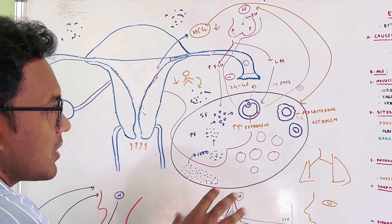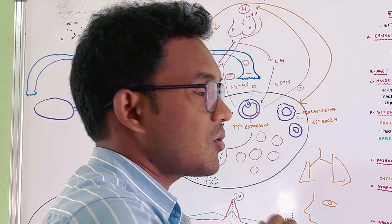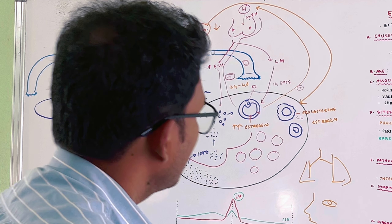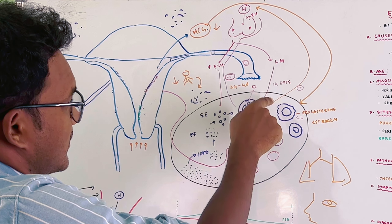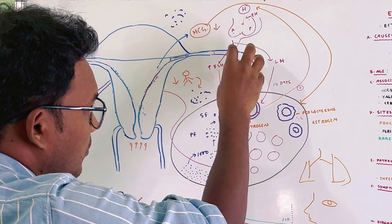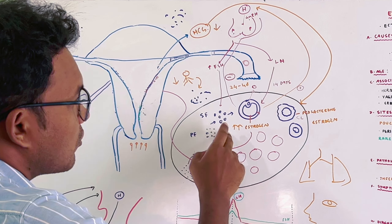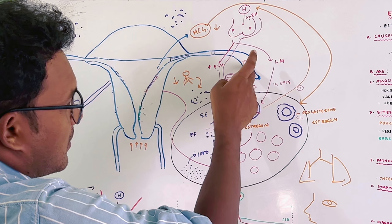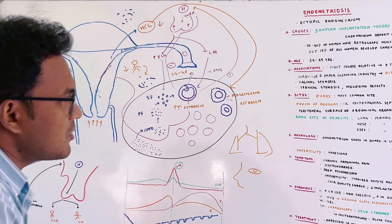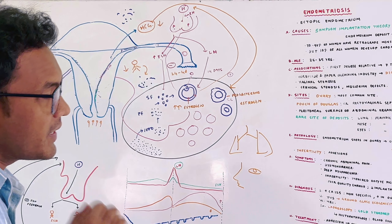When we collect endometrium, there is proliferation due to estrogen and secretions. This forms a cyst with a chocolate color — the chocolate cyst. The endometrium forms layers around the organ and the organ becomes adherent. These are adhesions. If there is a gap in the fallopian tube, it causes infertility.